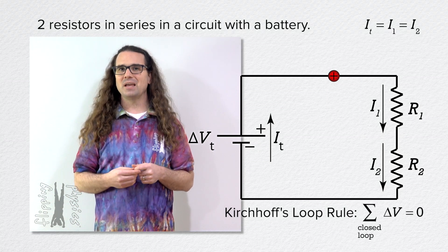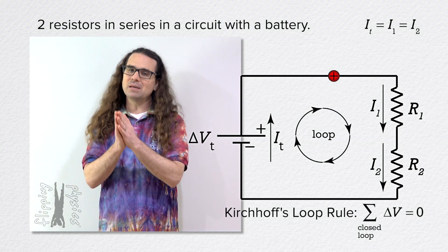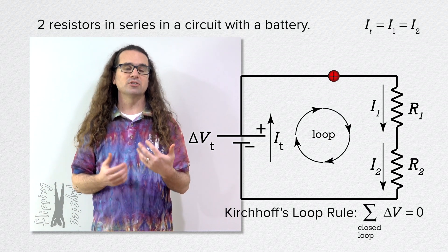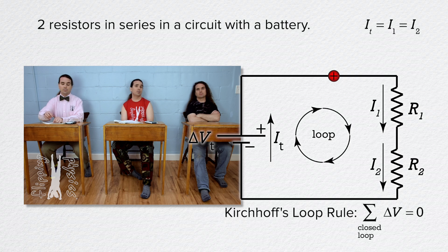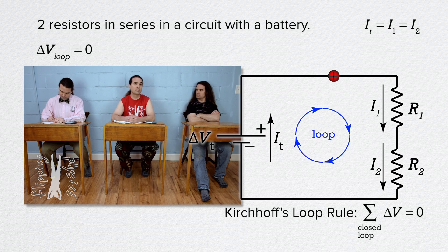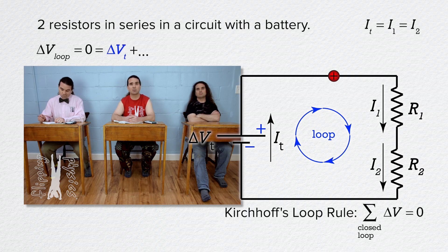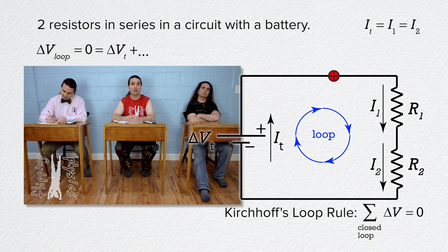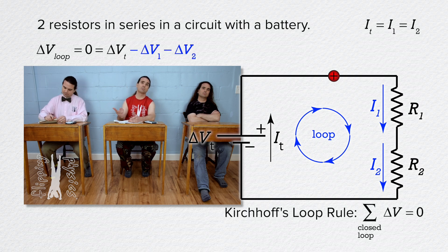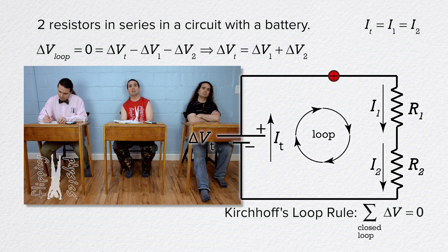If we define the loop in a clockwise direction in our circuit, Bobby, please tell me what Kirchhoff's loop rule equation will be. The electric potential difference around the loop equals zero. As the loop goes across the terminals of the battery from the negative terminal to the positive terminal, the electric potential difference across the battery equals the positive terminal voltage. As the loop goes across each of the resistors in the same direction as the current, we subtract the electric potential difference for both resistors. So the terminal voltage of the battery equals the sum of the electric potential differences across the resistors.